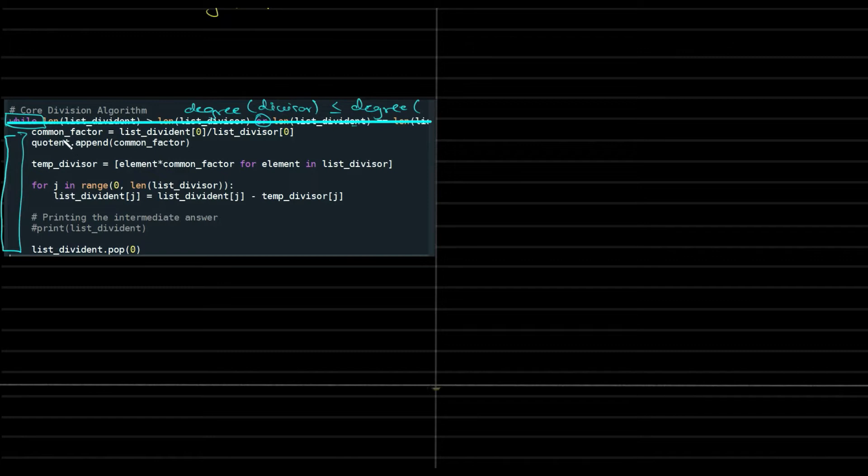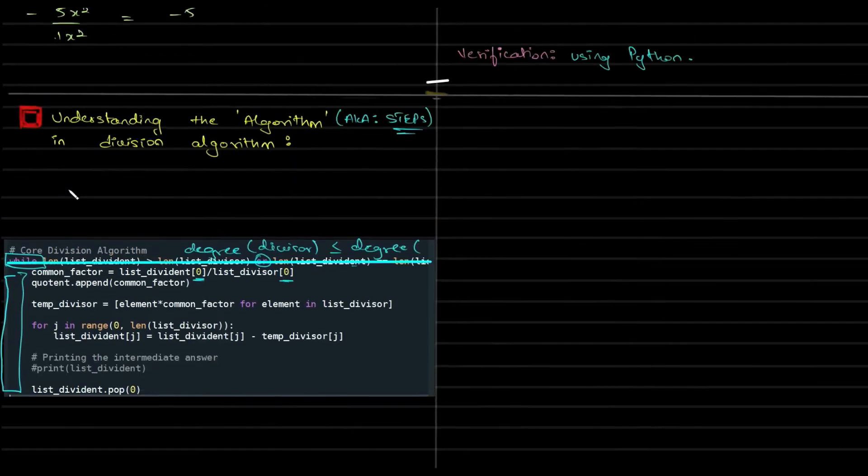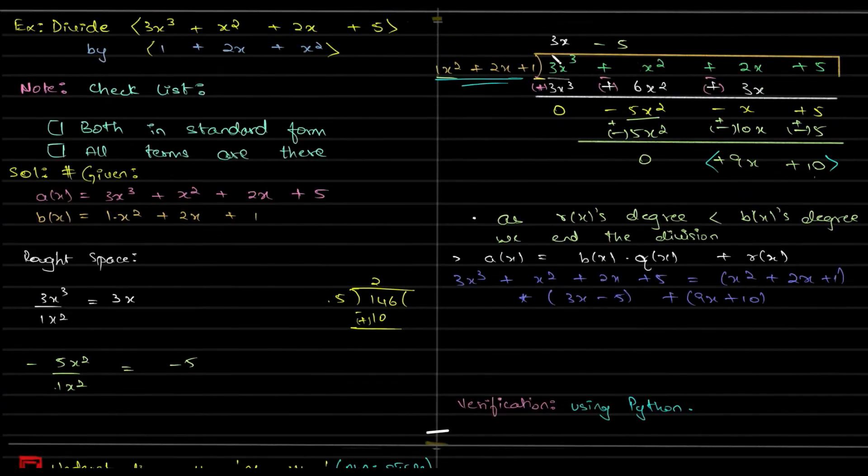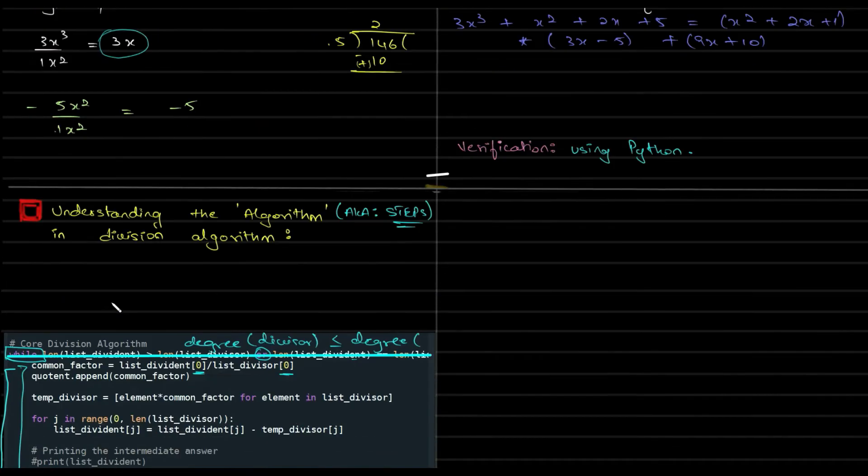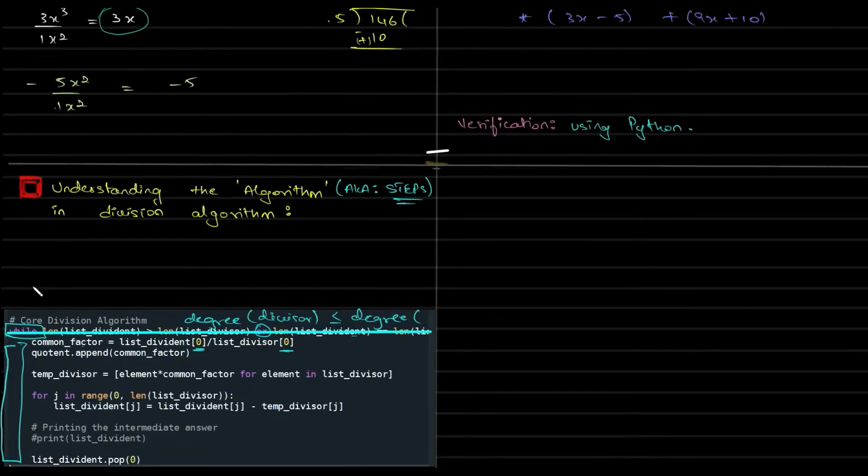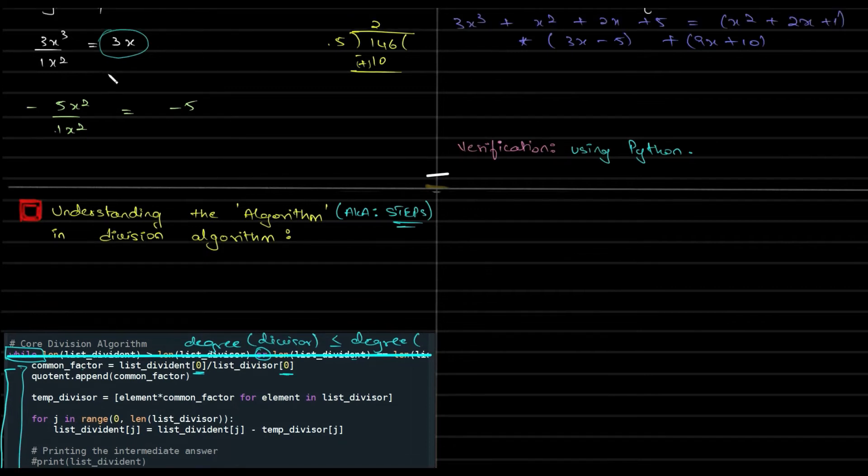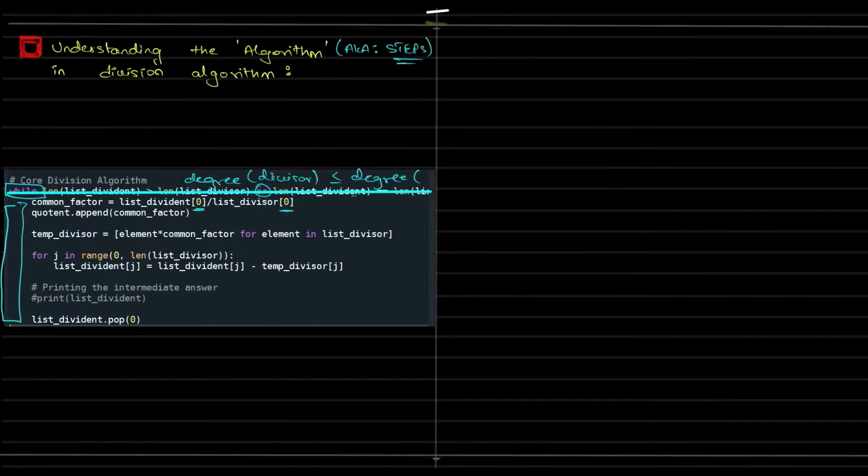So with this condition in mind, in each step we are doing this. The very first thing which I've done here is common factor is equal to list dividend divided by the list divisor, and I've written 0, 0 over here. So what does it mean? All I'm talking about is take the first term over here and the first term over here, divide them. And what do you get? In this case, I got 3. So that is your common factor. I could have called it something else, but I called it as common factor. If not, I could have clearly called it as quotient. I should have called it as quotient actually. That's a better one.